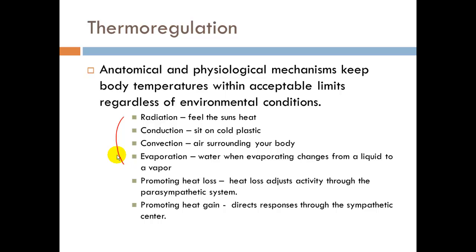Radiation — how we lose or gain heat — comes from the actual sun or the ambient temperature of the room. Conduction is direct heat loss: if we were sitting on something cold, we would have a good amount of surface area reducing heat, and as our blood passes by it, it would reduce the overall heat of our body.